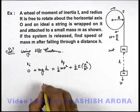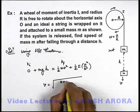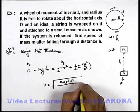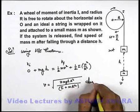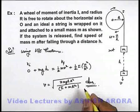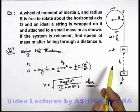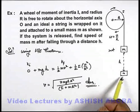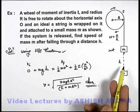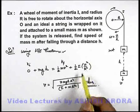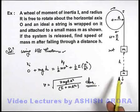Now on simplifying, we'll get the speed as the square root of 2mgh·r squared divided by (I + m·r squared). That is the answer to this problem — quite a simple analysis. We also studied earlier in the chapter of work-energy-power that when we are required to find the speed of moving bodies, it is advisable to use the work-energy theorem. The only difference here is we need to account for the rotational kinetic energy of an object which is rotating in the system along with the other translationally moving objects.